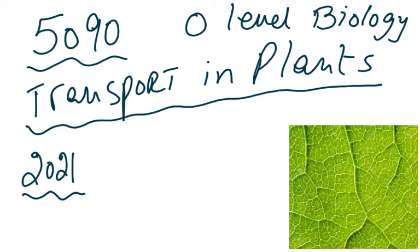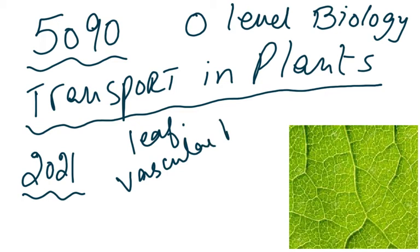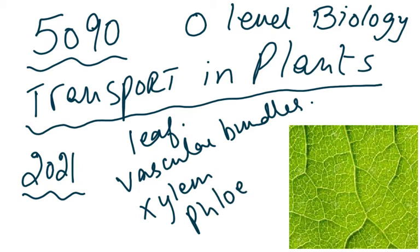Looking at the chapter on transport in plants, we need to know number one the structure of the leaf — we need to revise that. We need to know what the vascular bundles are, because transport in plants is in the vascular bundles. There are two parts of the vascular bundle: one is the xylem and the other is the phloem.